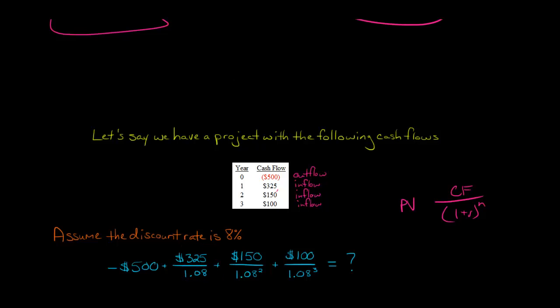The second cash flow, 150, is divided by 1.08 to the second power because it occurs two periods into the future. And then the third cash flow, that $100, is $100 divided by 1.08 to the third power. So here is how you set it up.